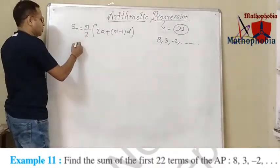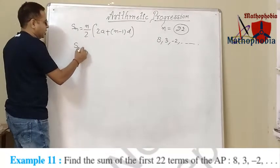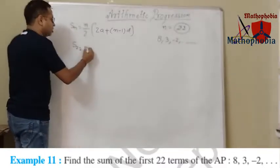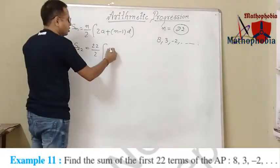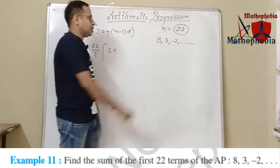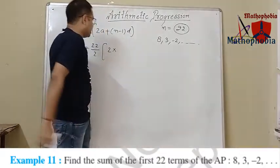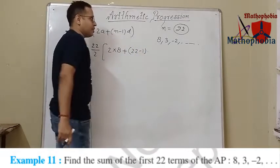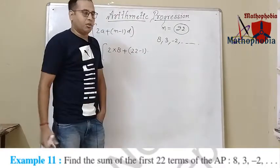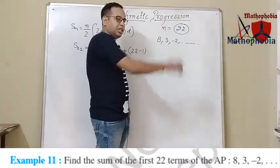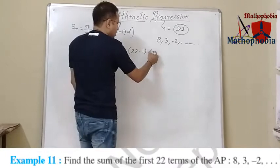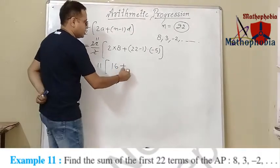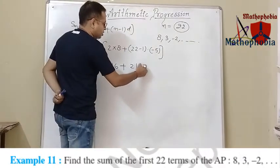Let's put n equals 22. So S22, the sum of 22 terms of this arithmetic sequence, equals 22 upon 2 times 2a. What is the value of a? It is 8. That is the first term. Plus n minus 1 is 22 minus 1, which is 21. What is the value of d? That is the common difference — 3 minus 8 equals minus 5. So we get 11 times 16 plus 21 into minus 5.